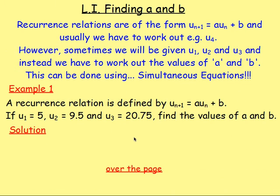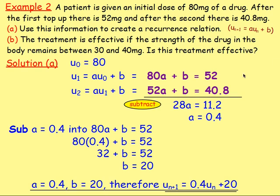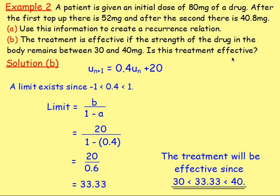The final topic was working out the values of A and B. Often you'll be given u1, u2, u3 and have to form your own recurrence relation, which you do using simultaneous equations. We had a straightforward example using the numbers to solve simultaneous equations and find A and B, then write the recurrence relation. We also had a real-life example about drugs in a patient's system, with a part B checking your understanding of the question.